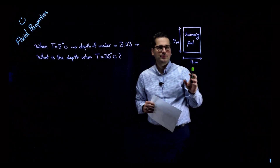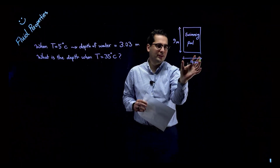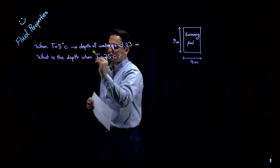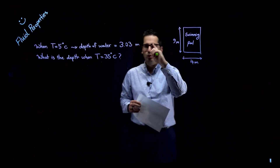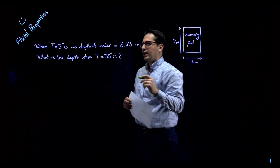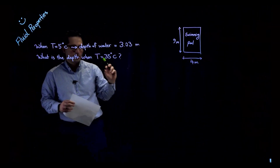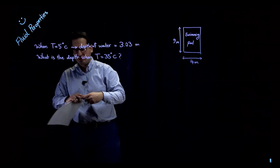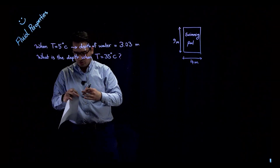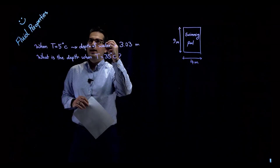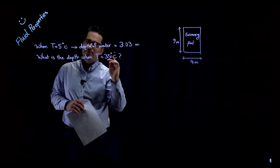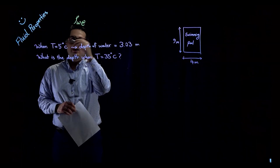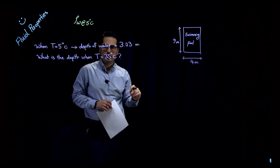Let's look at an example. We have a swimming pool that is 4 meters wide and 9 meters long. When the temperature of the water is 5 degrees Celsius, the depth of water in the pool is 3.03 meters. We want to find the depth of water when the temperature rises to 35 degrees Celsius.